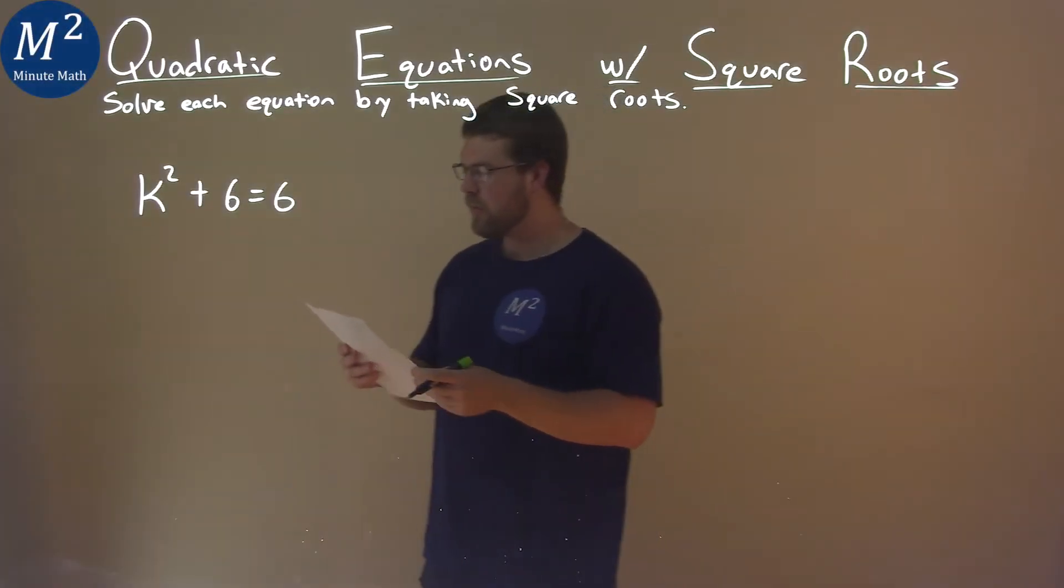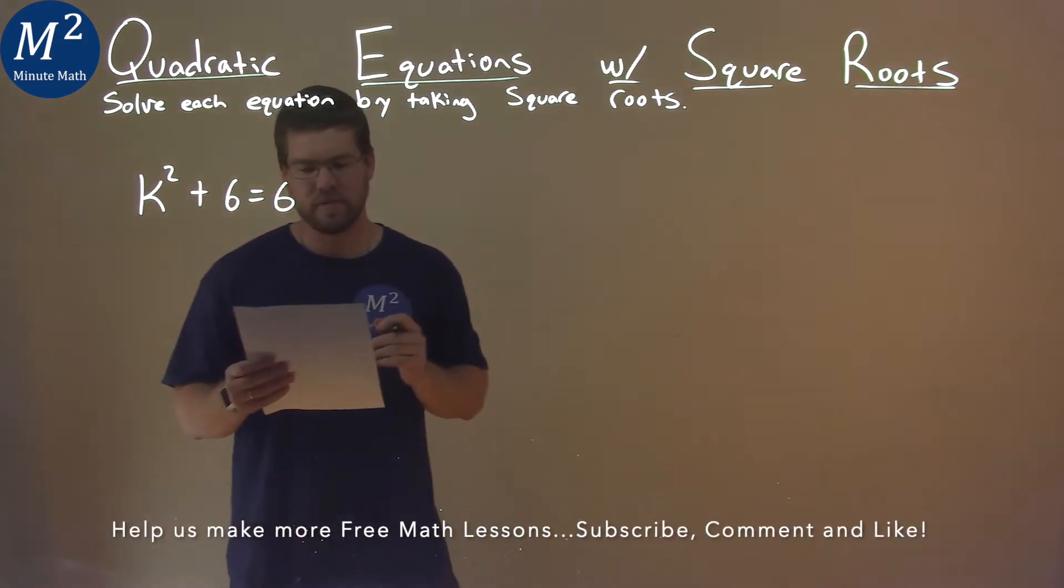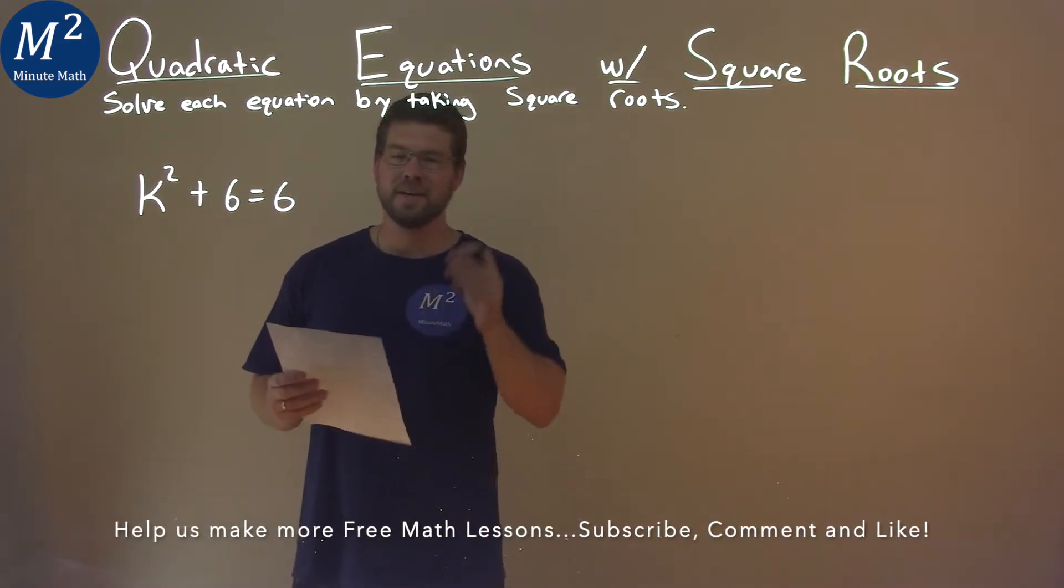We're given this problem right here. K squared plus 6 equals 6, and we want to solve this by taking the square root.